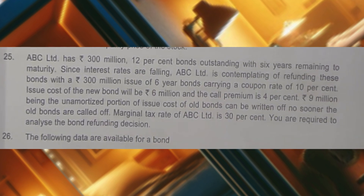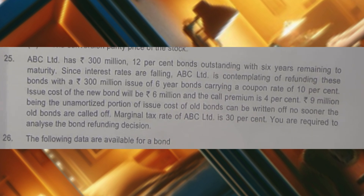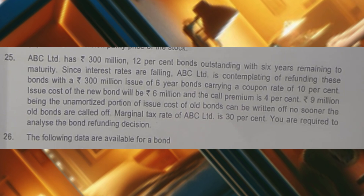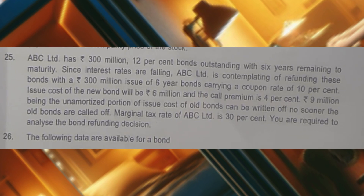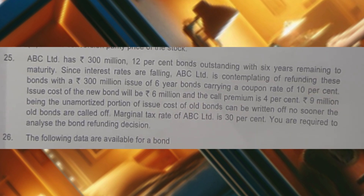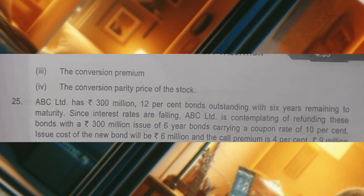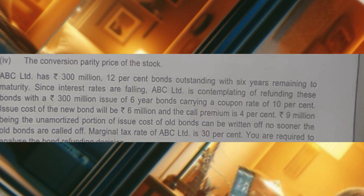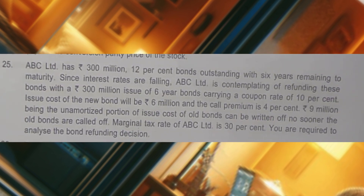Bond refunding is the topic. Bond refunding is nothing but replacement decisions in the case of capital budgeting. In bond refunding, the reason why a company wants to go for a replacement decision with respect to bonds is if the interest rates in the market are falling and the company can incur lower interest rate cost for the same value of bonds. In that case, the company is going to choose replacement decisions for the bonds. What the company has to do for considering the bond refunding decision is it has to calculate incremental NPV.